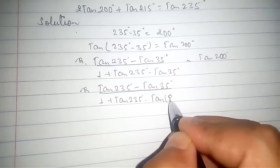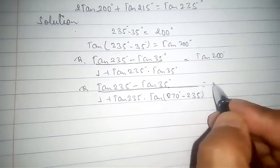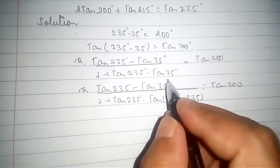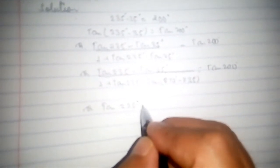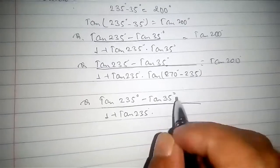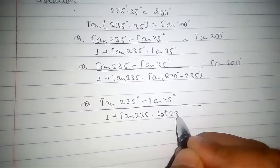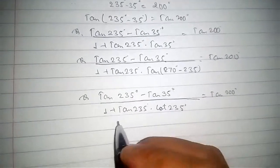Now 1 plus tan(235°)·tan(35°) can be written as tan(270° - 235°). The difference of these two angles gives tan(35°). So: tan(235°) minus tan(35°) divided by 1 plus tan(235°)·tan(35°) equals tan(200°).